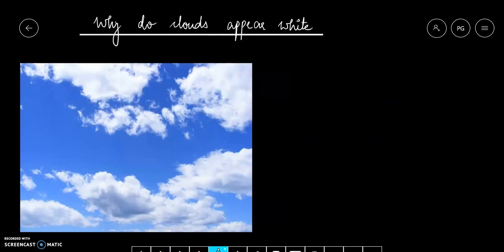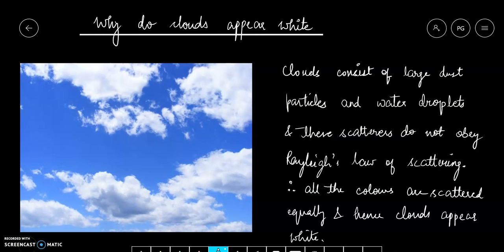Now, if we are asked why do clouds appear white? Clouds consist of large dust particles and water droplets, and these scatterers do not obey Rayleigh's law of scattering. Therefore, all the colors are scattered equally and hence clouds appear white. The particles inside clouds have very large size, very much large as compared to the air molecules. The water droplets or dust particles have very large sizes, so all the wavelengths equally reflect and that's why clouds appear white to us.